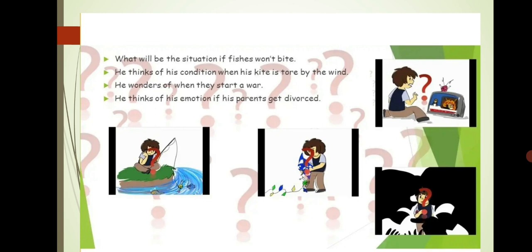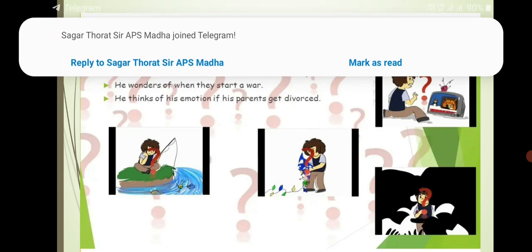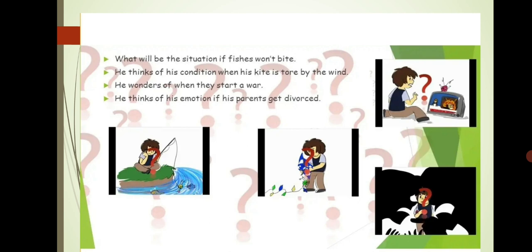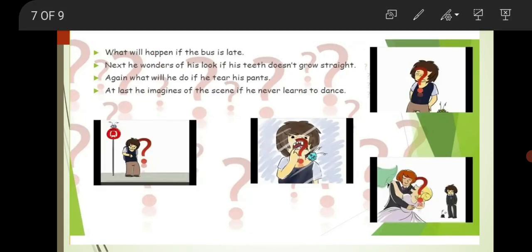He wonders what will happen when they start a war. Now in this pandemic situation, the child is really fearful that what will happen if they start a war? The war happens between two countries when they have a fight over some situation. There can be a fight over diesel, petrol, or various things. He thinks of his emotion if his parents get divorced. The child might be alone at home and worrying, what will happen if my parents get divorced? You can see all these situations in these pictures also.